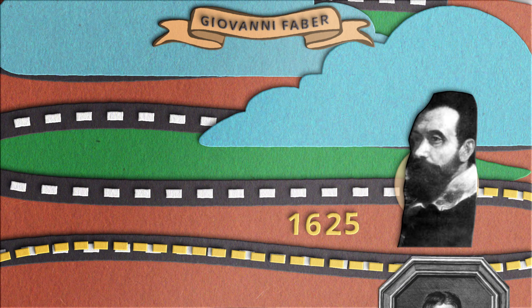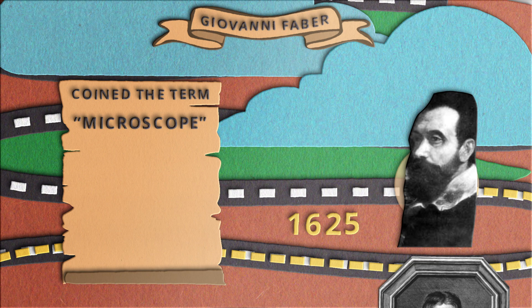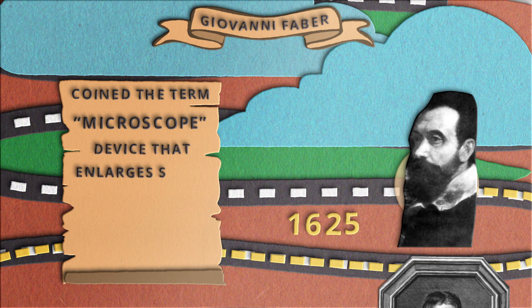In 1625, Giovanni Faber, a German doctor, botanist, and Galileo's friend coined the term microscope for the device that enlarges small objects invisible to the naked eye.